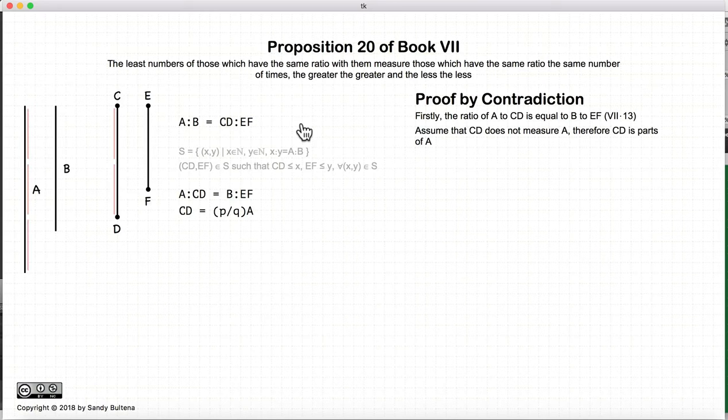Here's first, we're starting with the contradiction. So if CD does not measure A, so if CD is not a part of A, then it is parts of A. So in other words, we'll have to divide A up into something, and CD in this case is two-thirds of A, but it could be any fraction where the P is not equal to 1.